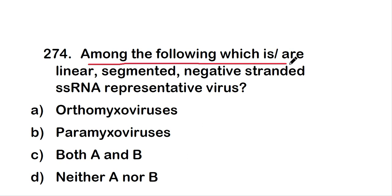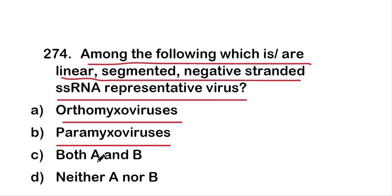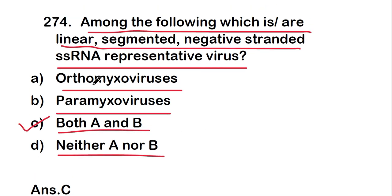The next question: among the following, which is or are linear segmented negative-stranded single-stranded RNA representative virus? The options are orthomyxovirus, paramyxovirus, both A and B, or neither A nor B. The right answer is option C — both orthomyxovirus and paramyxovirus are linear segmented negative-stranded single-stranded RNA viruses.